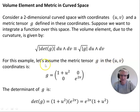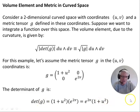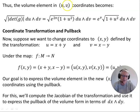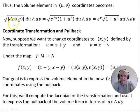For this example, let's assume the metric tensor G in UV coordinates is the matrix with entries: 1 plus u squared, 0; 0, e to the 2v. The determinant of G is just the diagonals multiplied together minus the off-diagonal product, so it's e to the 2v times 1 plus u squared. The volume element in UV coordinates therefore becomes the square root of the absolute value of the determinant of G times du wedge dv. We can take out a factor of e to the v, giving e to the v times the square root of 1 plus u squared, du wedge dv. That's the volume element in UV coordinates.